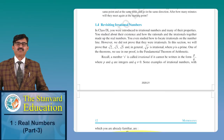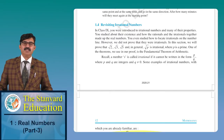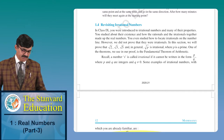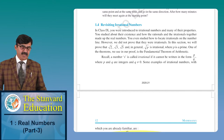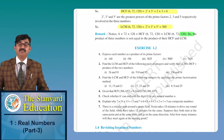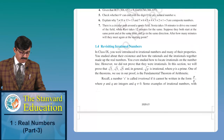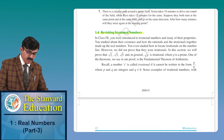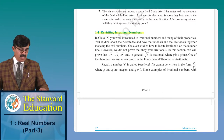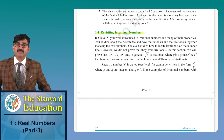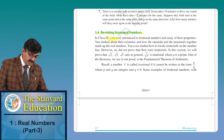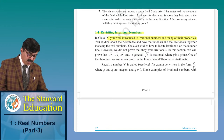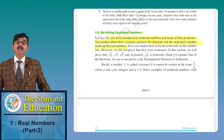Dear students, today we are going to start the third session of chapter number 1. Till the second session we have done all the questions of exercise 1.2, and now we come to the topic of revisiting irrational numbers. In class 9th we understood about irrational numbers, and we learned that rational and irrational numbers together make up real numbers.